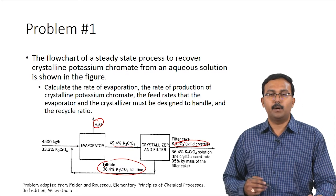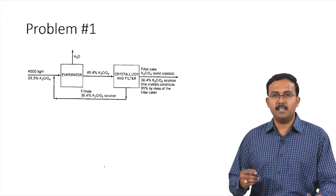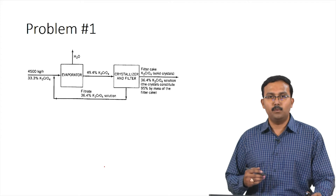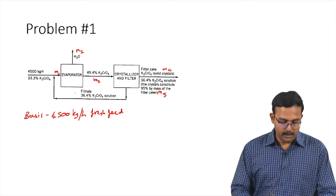Just like any material balance problem, the basis is taken from the information given. The basis is 4500 kilograms per hour of fresh feed. We label the streams: M1 is the total feed entering the evaporator, M2 is the rate of evaporation, M3 is the feed rate to the crystallizer, M4 is the mass of solid crystals, M5 is the liquid accompanying the filter cake, and M6 is the recycle stream.